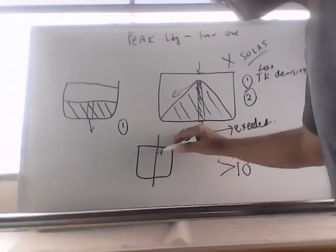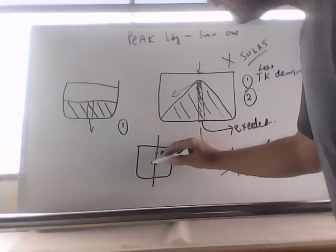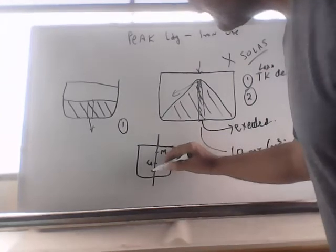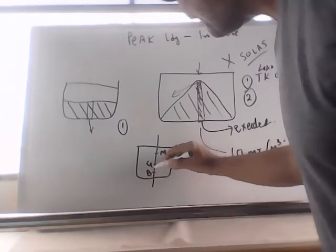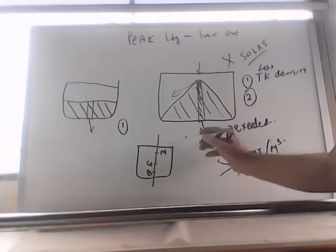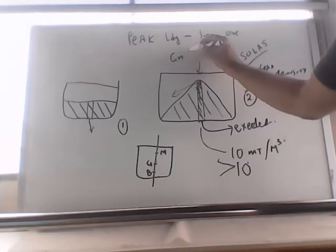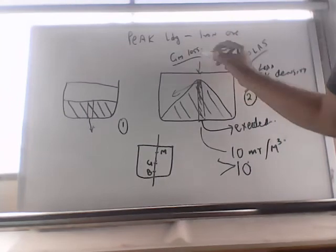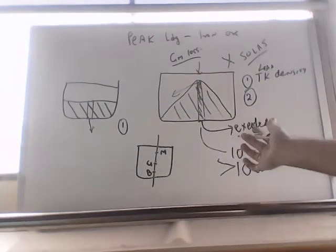This is the M. This is the center of gravity and center of buoyancy. So if you load like this, the center of gravity goes high. GM is less. So the ship's rolling is more slow and comfortable.